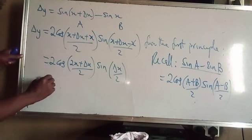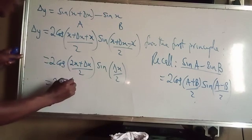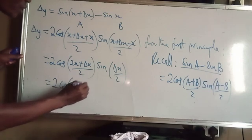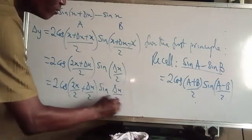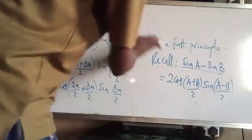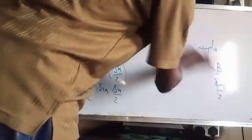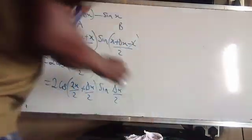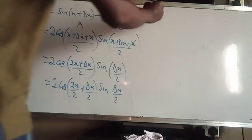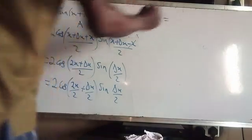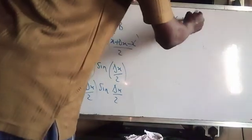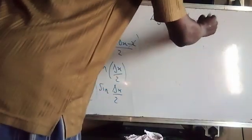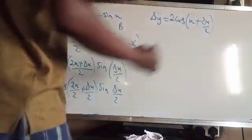Which means delta y equals 2 cos of [x plus delta x over 2] — since 2x over 2 is x — times sine of delta x over 2.